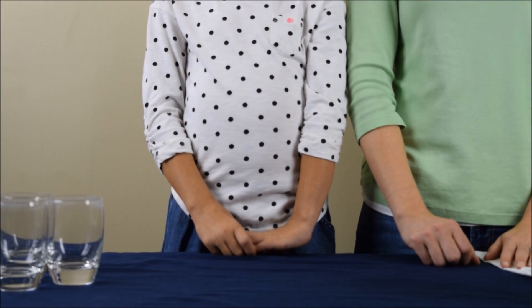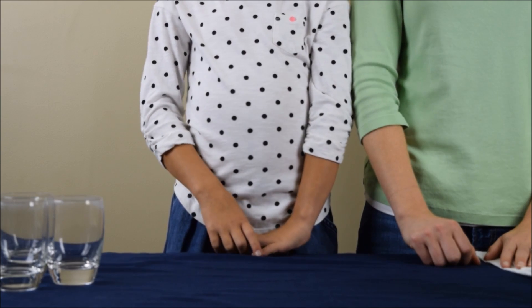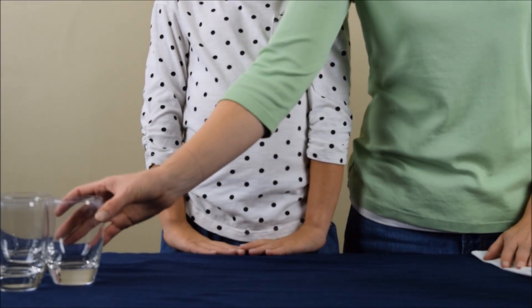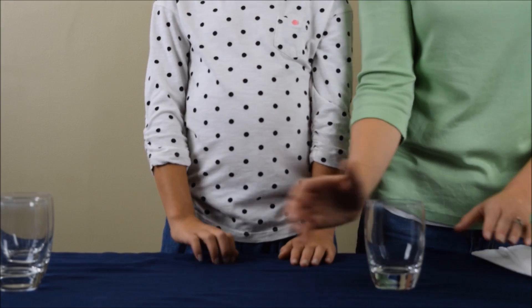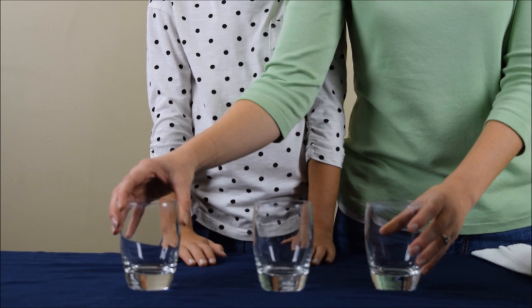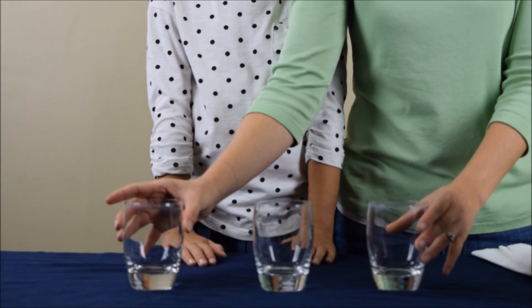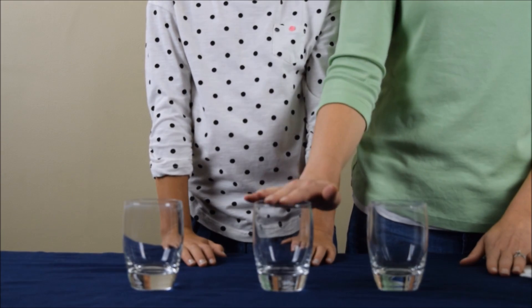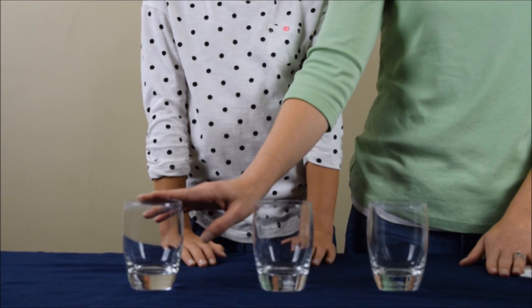So now that we have our paper towels ready, we are going to get our glasses ready. Like I mentioned before, for this variation we are going to use three glasses. You want to place your glasses in a row, and one thing to note is the glasses have to be of equal height.